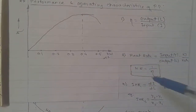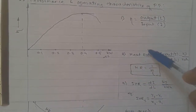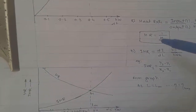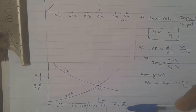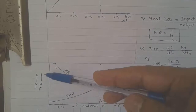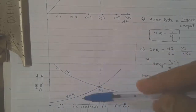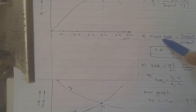The graph for heat rate versus output is plotted next. On the x-axis, load is plotted, and on the y-axis, heat rate is plotted. The heat rate versus load graph is decreasing — as load increases, heat rate goes on decreasing. From the formula, since heat rate is inversely proportional to output, as output increases, heat rate decreases.